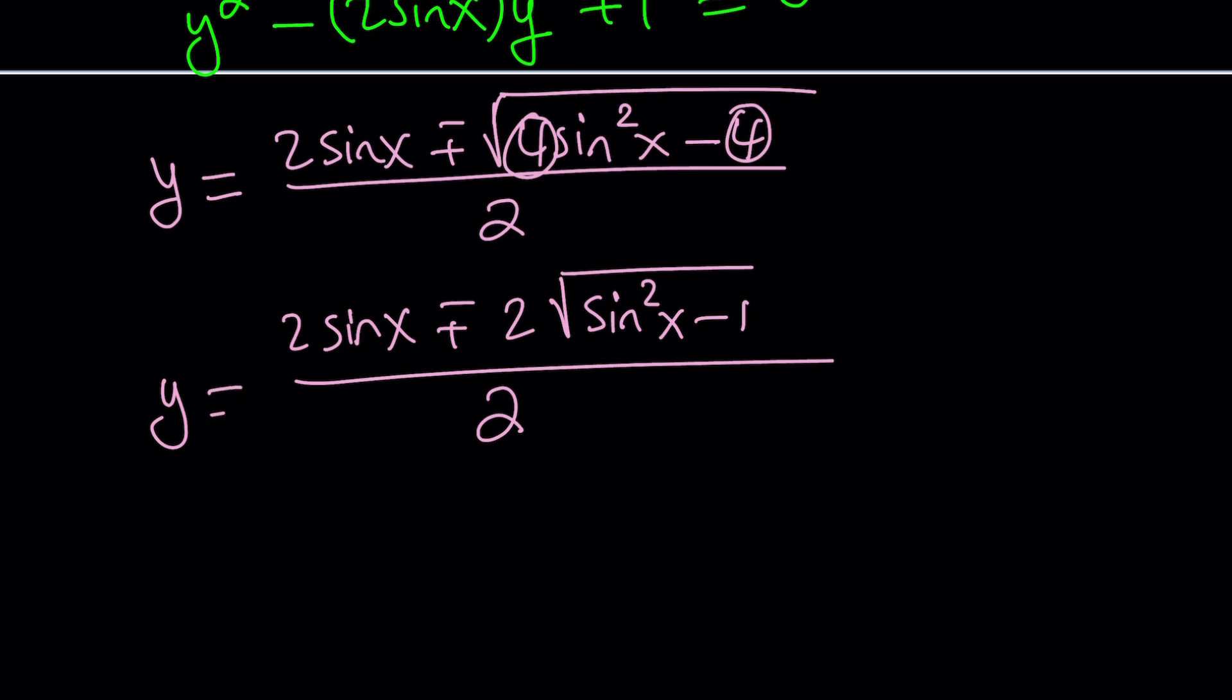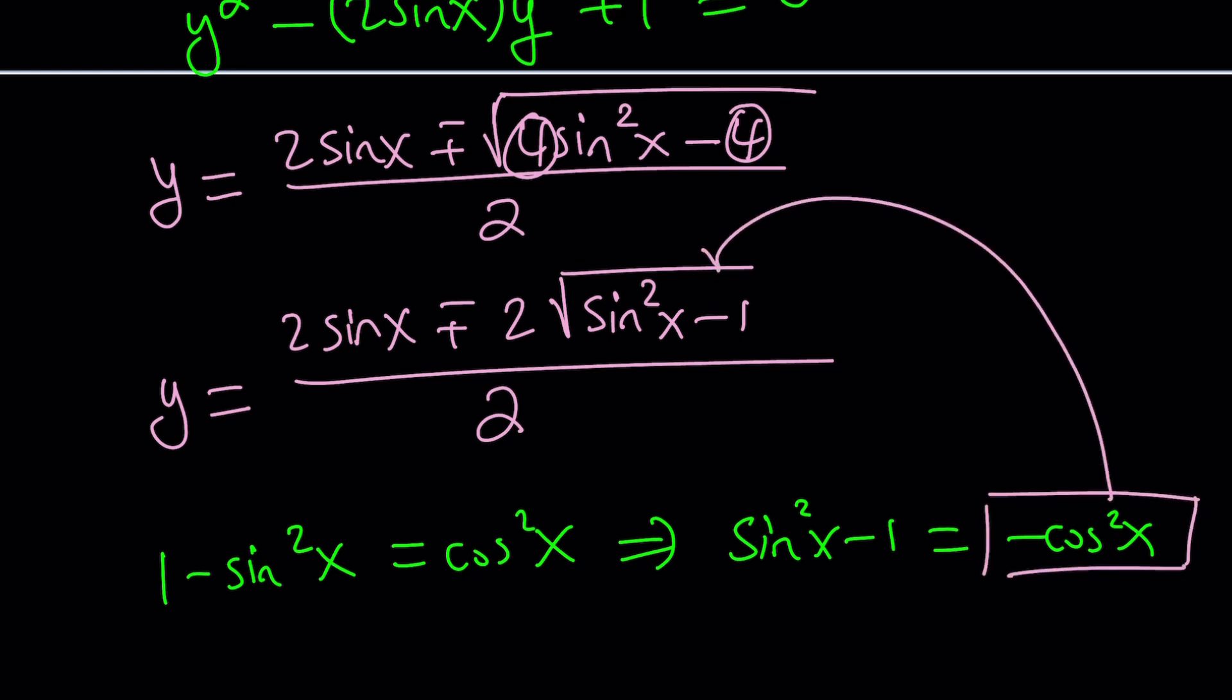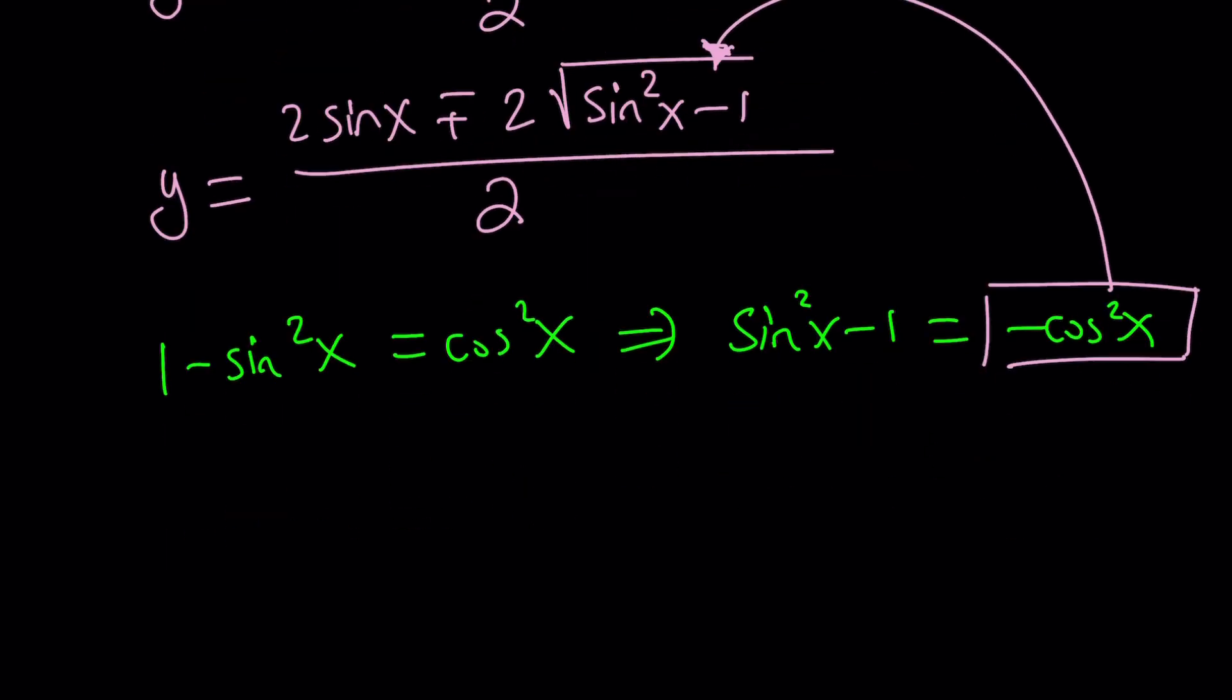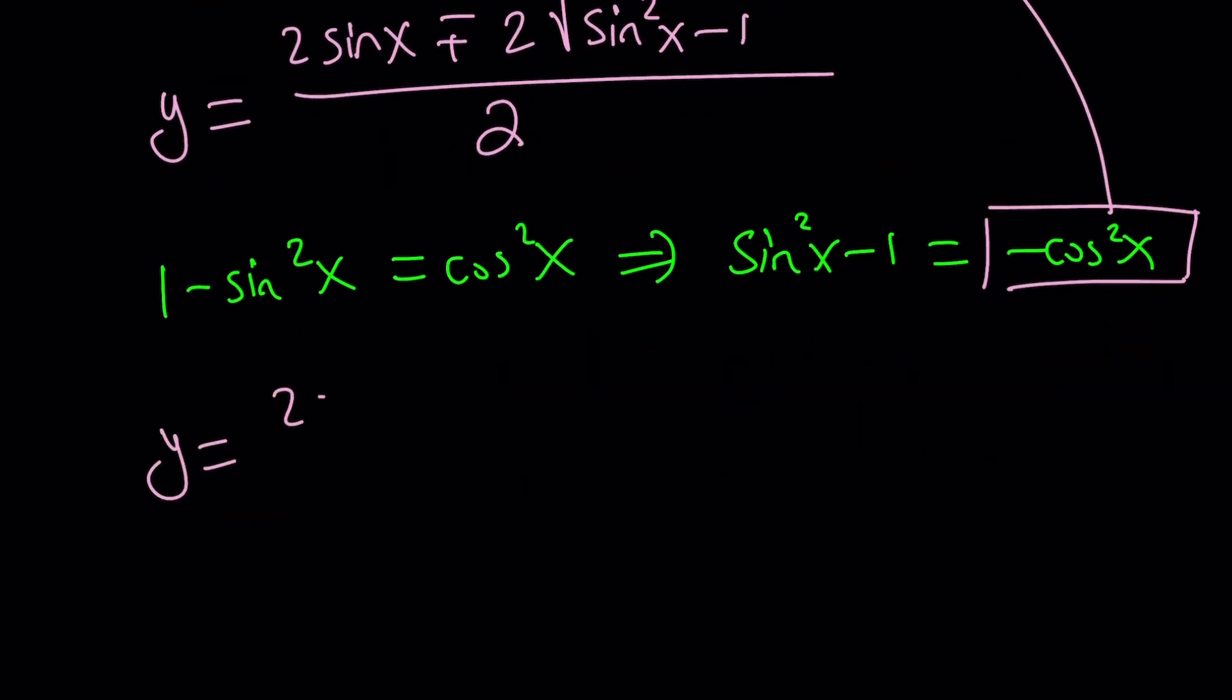And now we have inside the radical sine squared minus 1. Uh-oh. Houston, we have a problem. Why? The problem is 1 minus sine squared is known as what? Cosine squared, right? What about its opposite? Of course, sine squared minus 1 from here is negative cosine squared. That's the problem. We have a negative number or a non-positive number inside the radical. What does that mean?